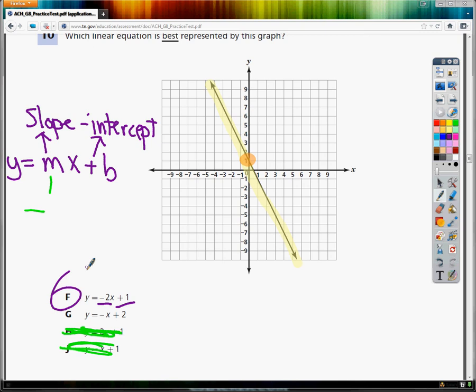If you wanted to find the slope manually, the negative 2 would be negative 2 over 1. I'd find any point on the graph that crosses at a corner and find another one. So like right in here.